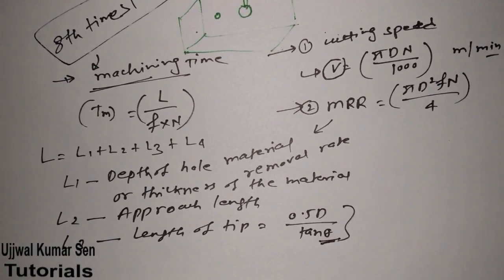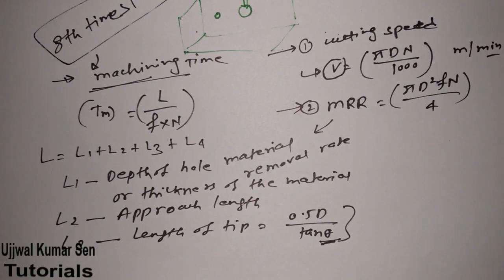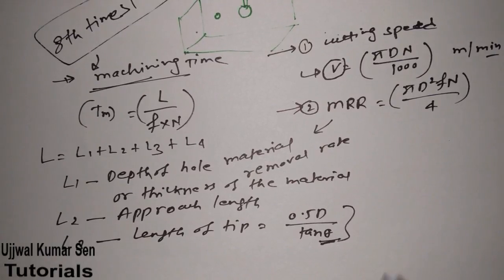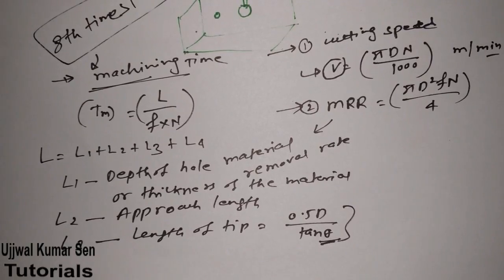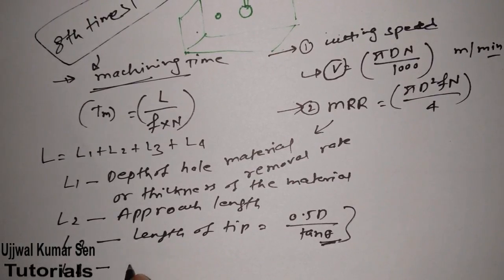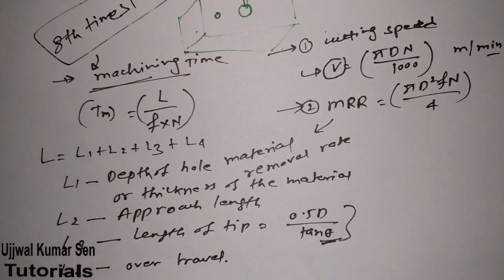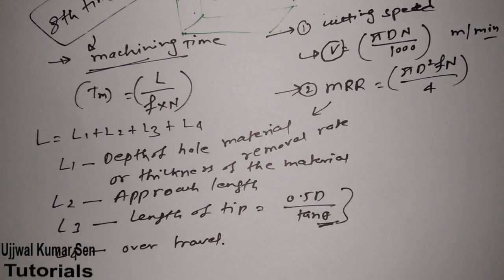L3 is the length of the tip, given by the formula: L3 = 0.5d / tan(θ). I'll explain what θ is because this is a common source of confusion in exam questions. L4 is the over-travel. So those are the three key formulas and their components.